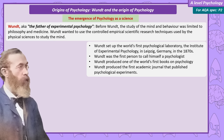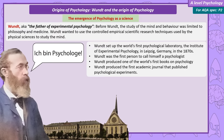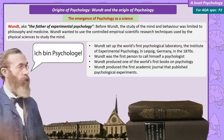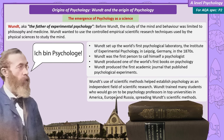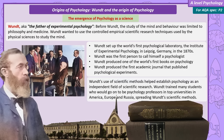In the 1870s, Wundt set up the world's first psychological laboratory, the Institute of Experimental Psychology, in Leipzig, a city in Germany. Wundt was the first person to call himself a psychologist, and he produced one of the world's first books on psychology, as well as the first academic journal that published psychological experiments. All of this helped establish psychology as an independent field of scientific research, and before long he had students from all over the world wanting to train at his institute, many of whom went on to become professors at top universities in America, Europe, and Russia, spreading Wundt's scientific methods.